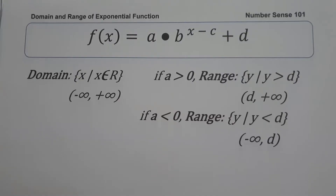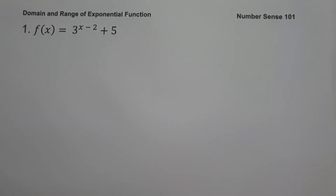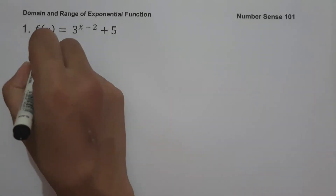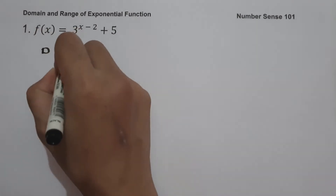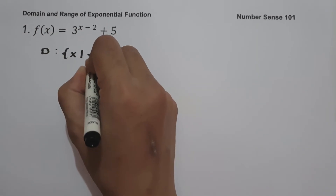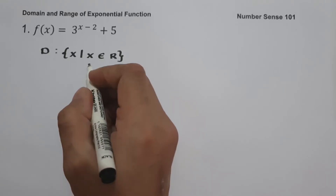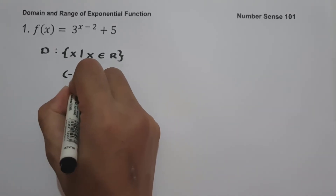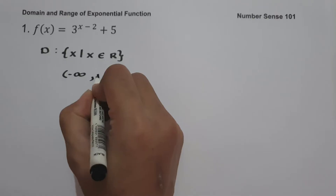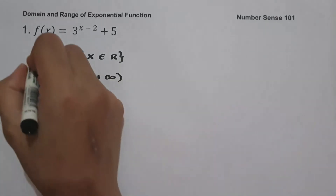So let's start with example number 1: f(x) = 3 raised to x minus 2 plus 5. The domain of an exponential function is always all real numbers. So the domain is the set of x values such that x is the set of all real numbers, or in interval notation, from negative infinity up to positive infinity.